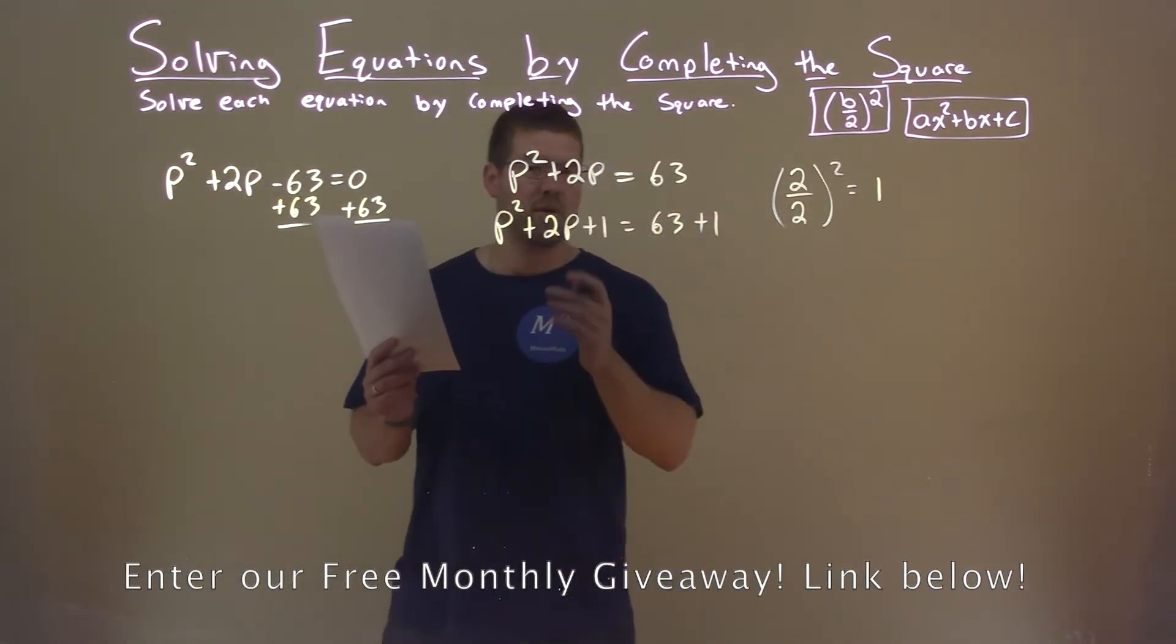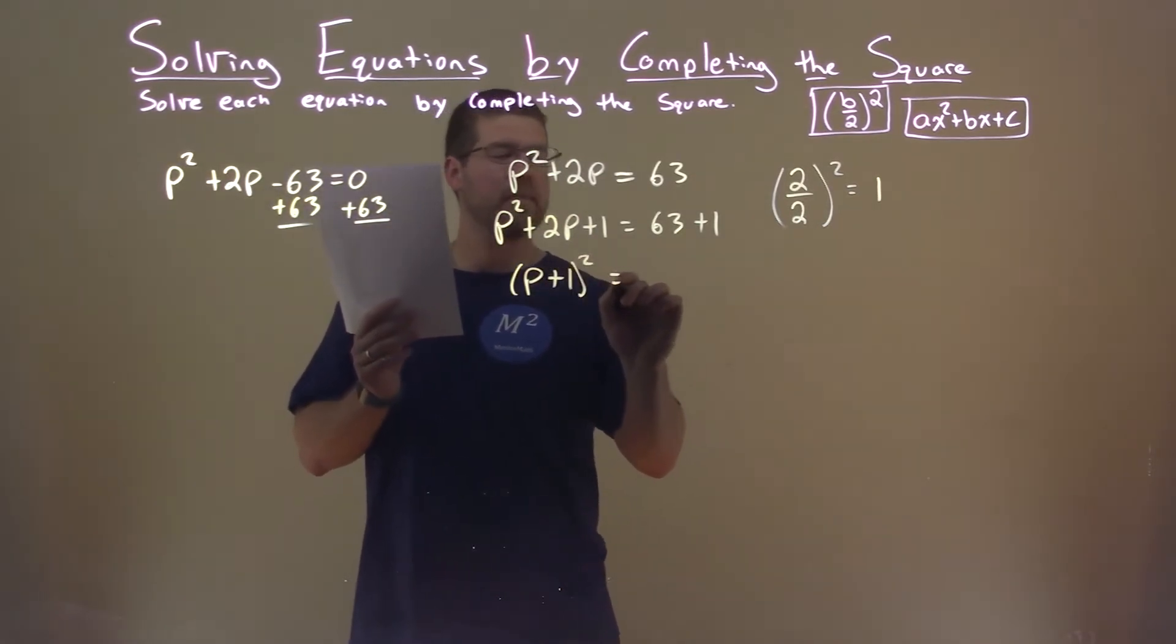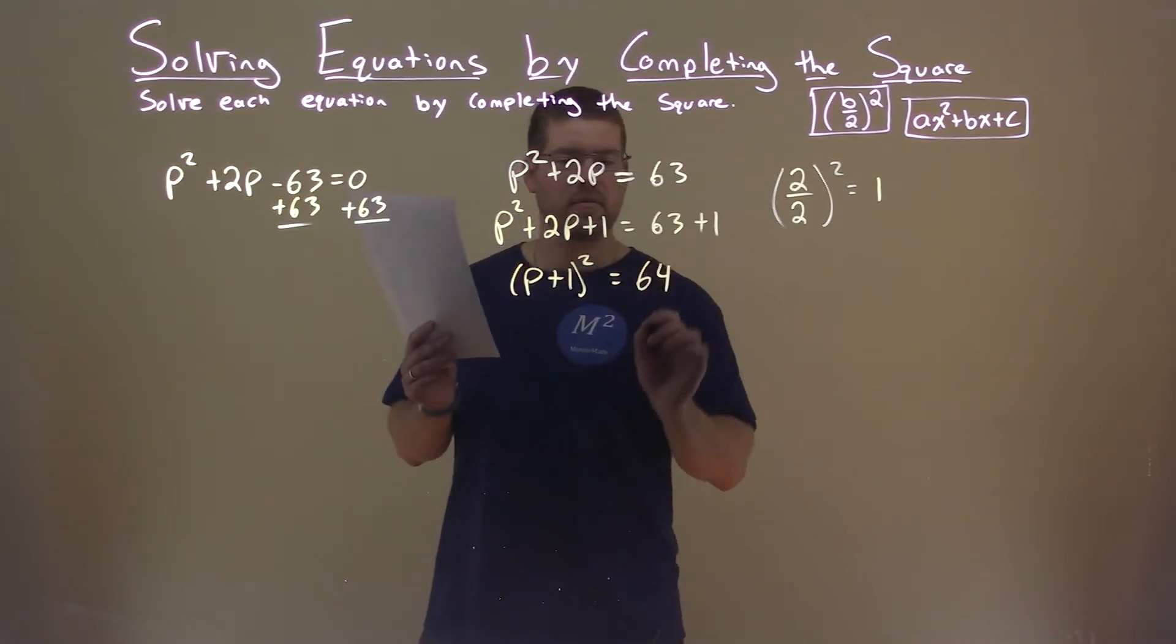The left-hand side becomes a perfect square. We have p plus 1 here, all squared, equals 63 plus 1, which is 64.